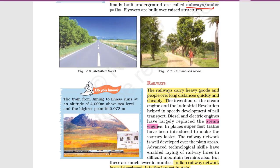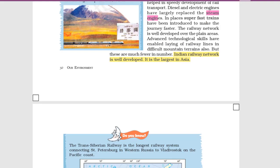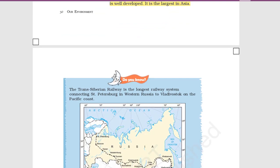Railways carry huge amounts of goods and people over long distances quickly and cheaply. When the steam engine was invented railways developed slowly, followed by diesel engines, super-fast trains, bullet trains, and metro trains. The Indian railway is well developed — it is the largest in Asia and one of the largest in the world.